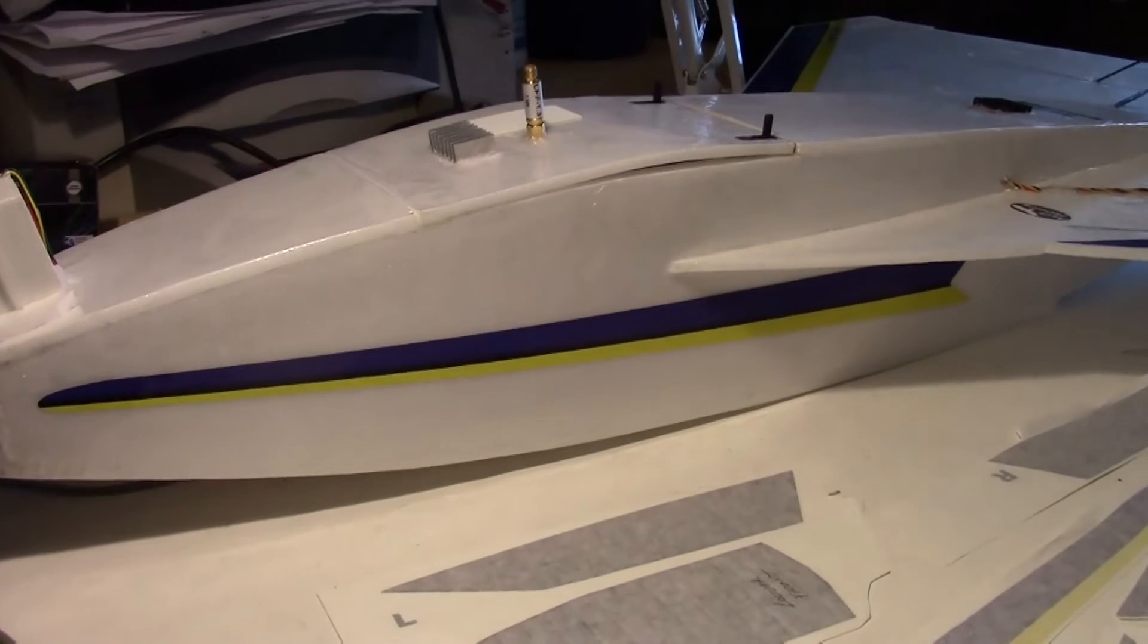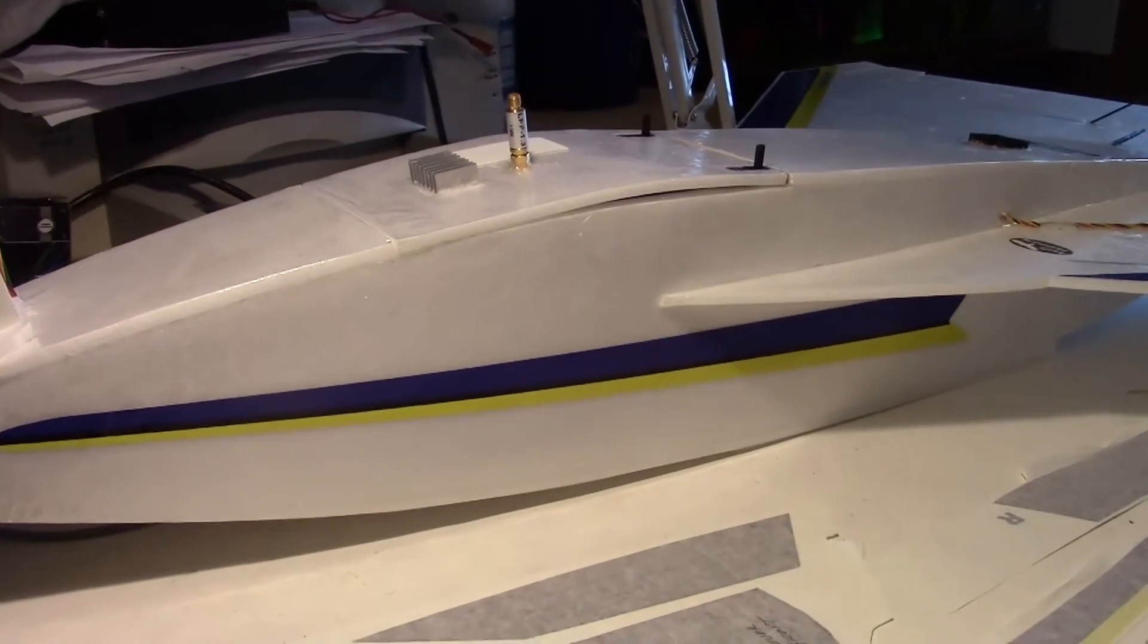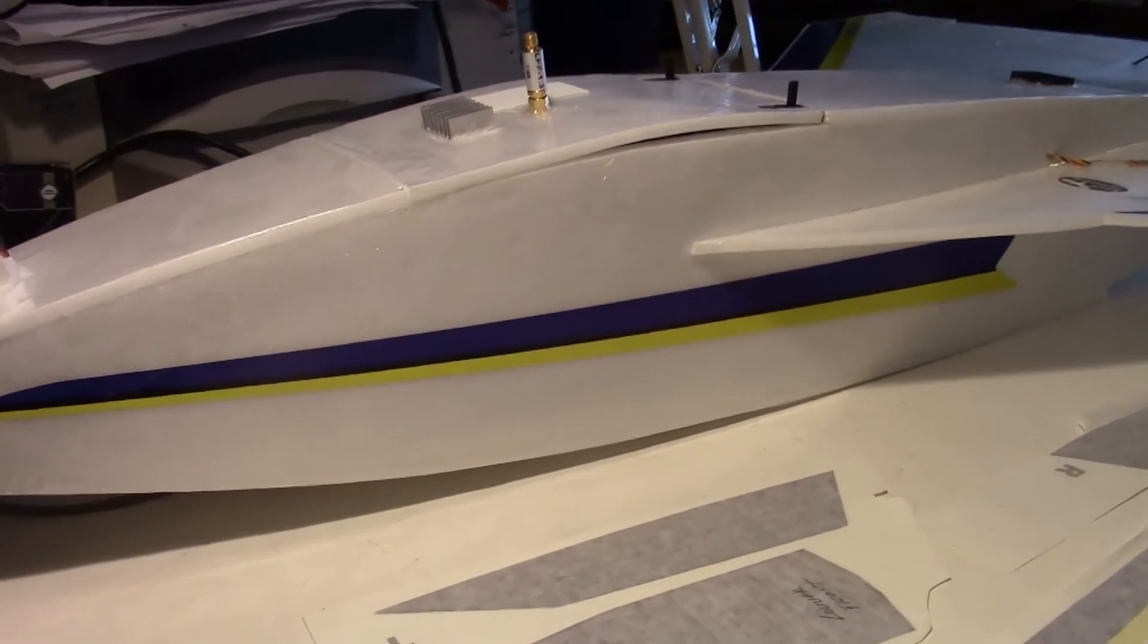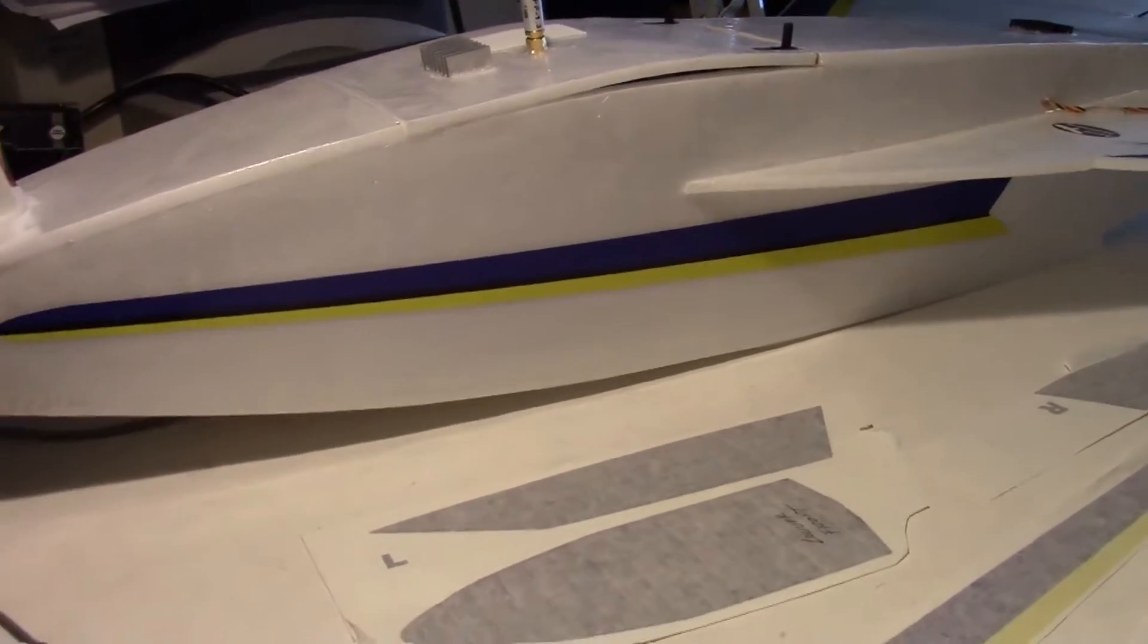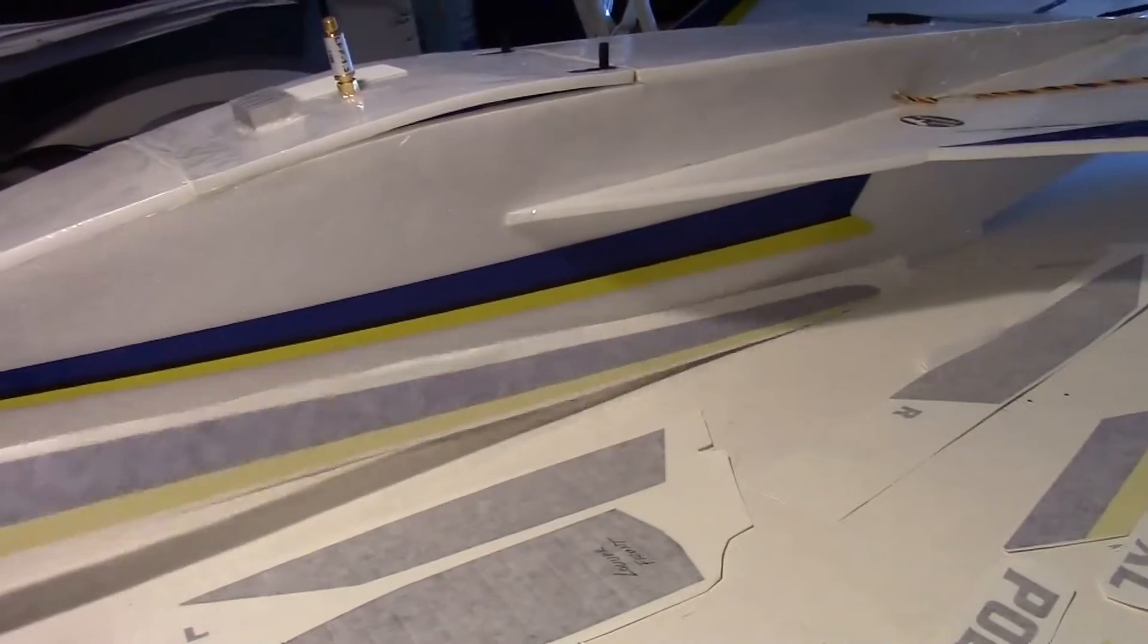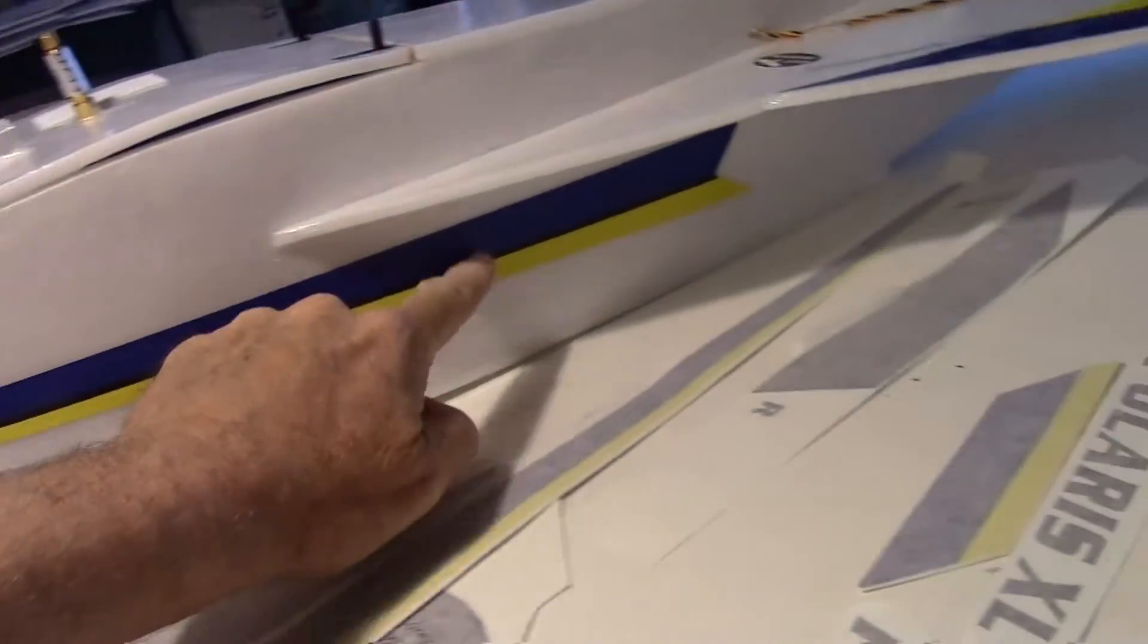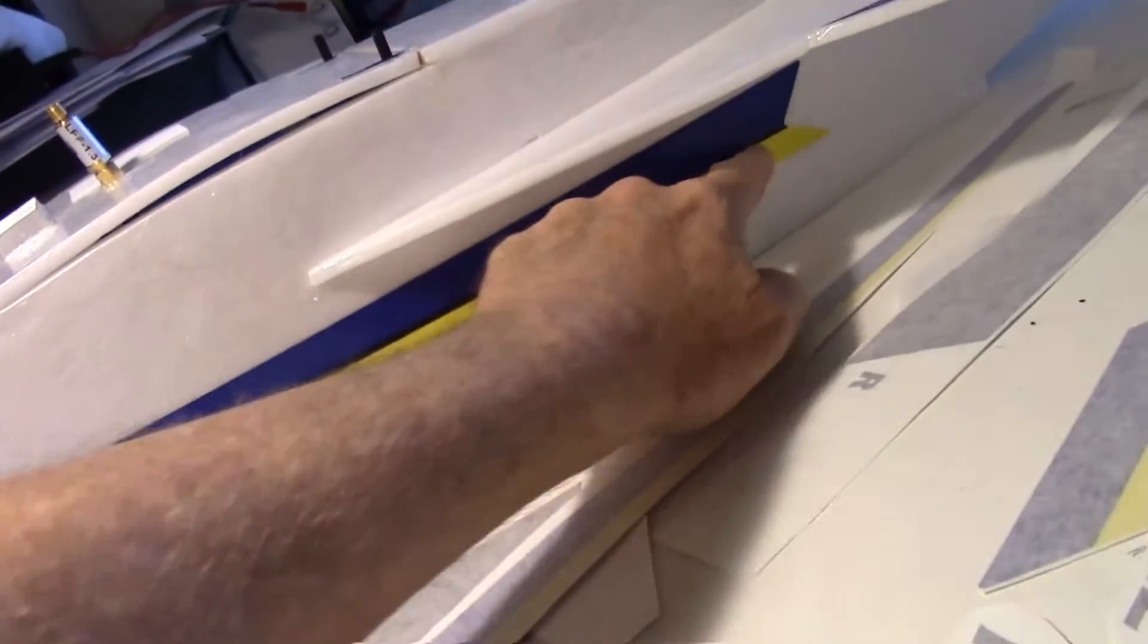I'm working on putting the decals on the plane and I want to show you where the decals go and how they go on. Let's start with the side here. You can see I put one of these stripes on the side. The blue goes towards the top, the tip starts about in the middle near the front and goes under the wing, parallel to the wing.